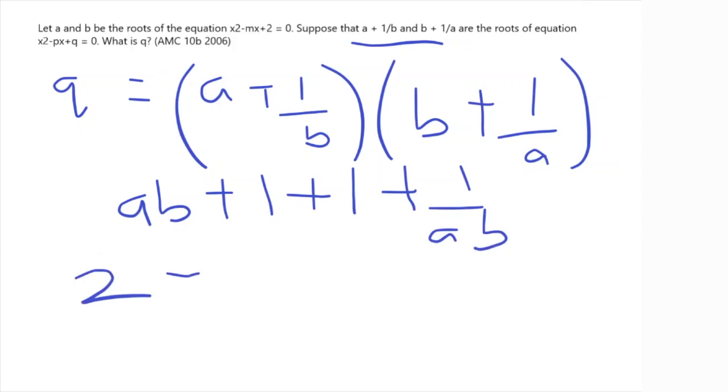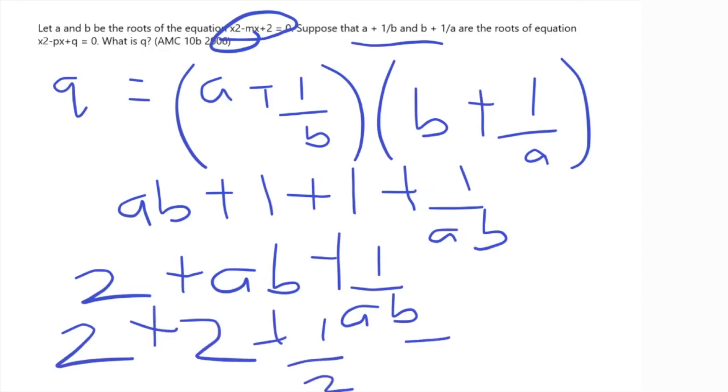So we're just supposed to find ab plus 2 plus 1 over ab, and now we can actually know through the first equation that ab, which are the roots of the first equation, is actually equal to 2. So this becomes 2 plus 2 plus 1 over 2, and that gives us 4 plus 1 half, and then that's 9 over 2, and that's your answer. So here we can clearly see that Vieta's makes it so much easier to solve problems, because we know these relationships between the roots and the coefficients of quadratic equations.